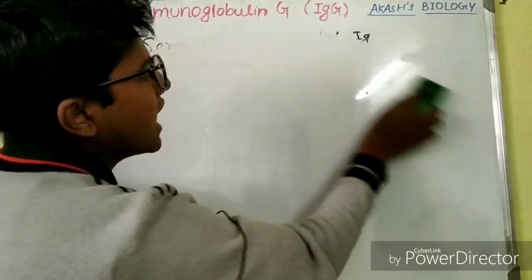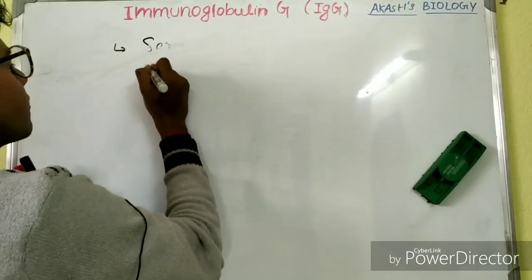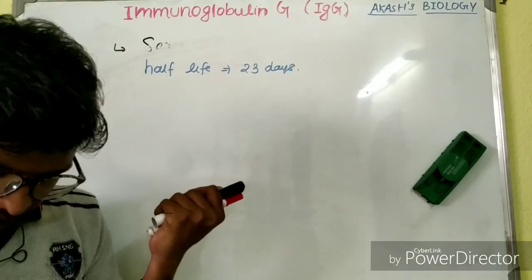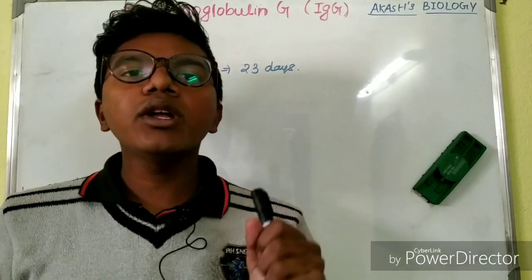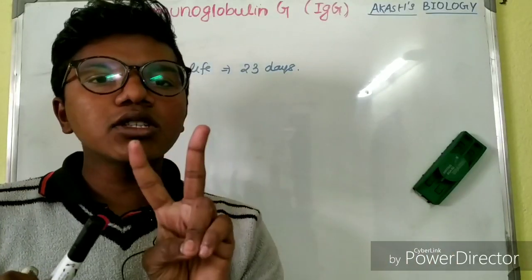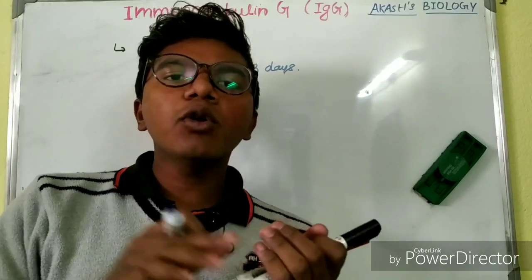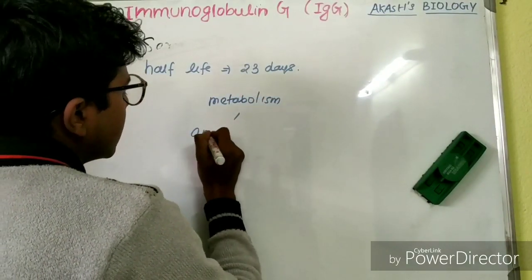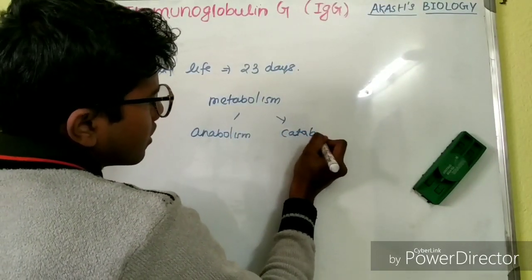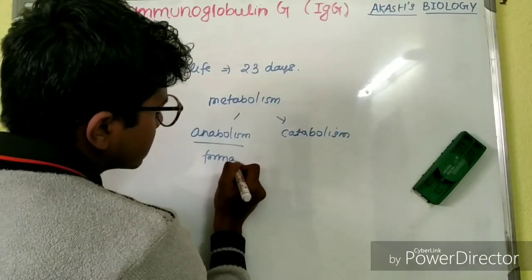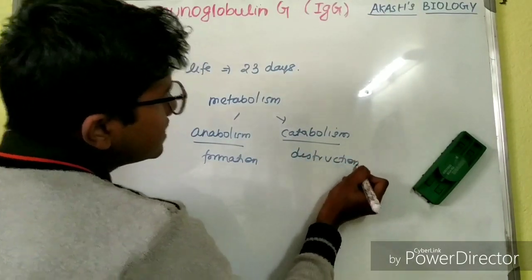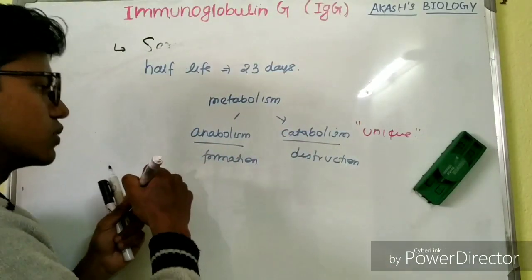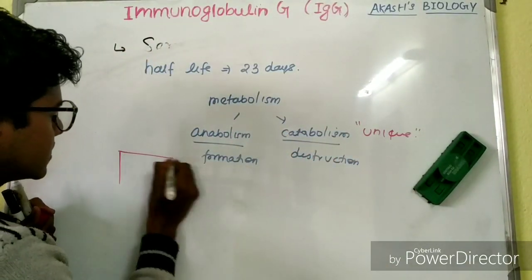Since IgG comes late and persists long, it has a maximum half-life of 23 days. It also has a unique catabolism. Metabolism consists of two phases: anabolism means formation, and catabolism means destruction. IgG has a unique phase of catabolism or destruction.